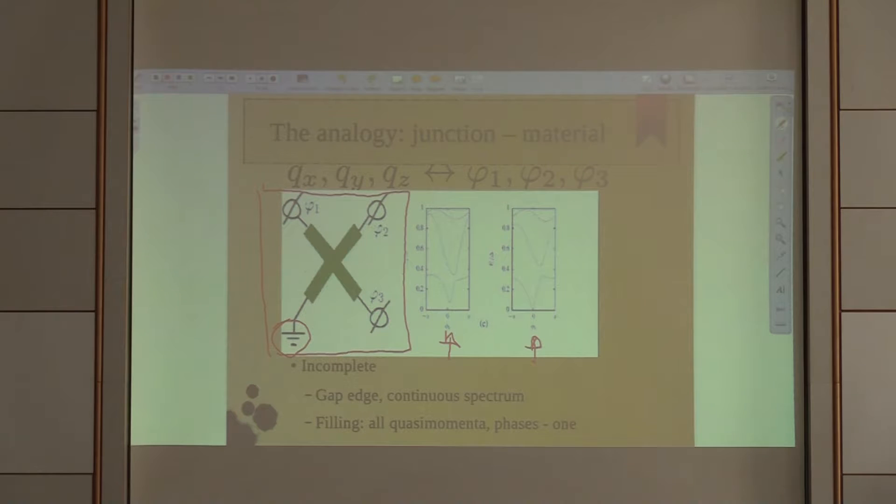Of course one sees immediately that it's not complete. First of all, because the discrete band structure lives only in a finite window up to the gap of the bulk material. At high energy it becomes continuous spectrum, one cannot distinguish that.